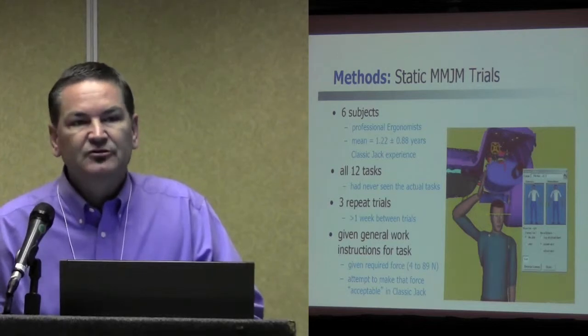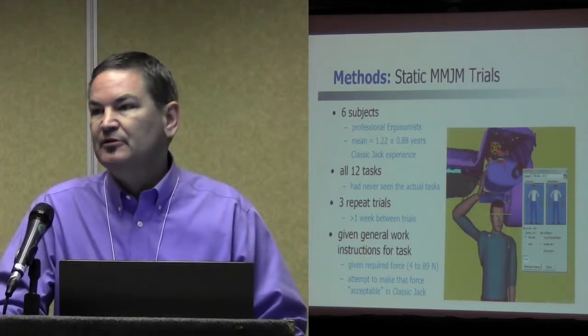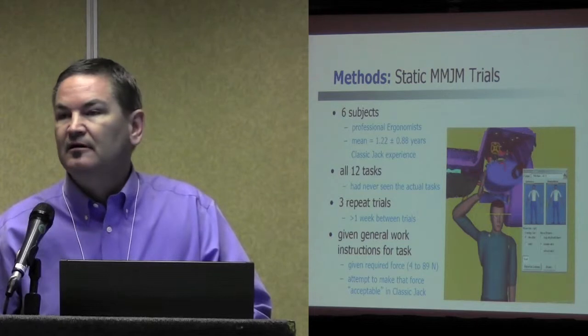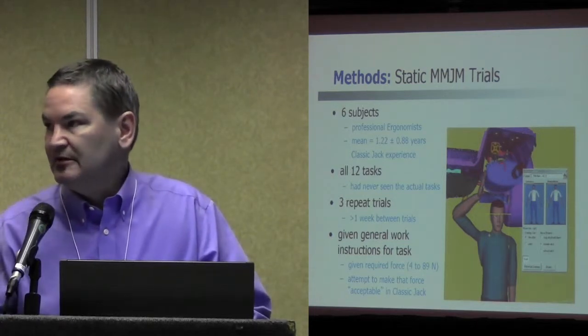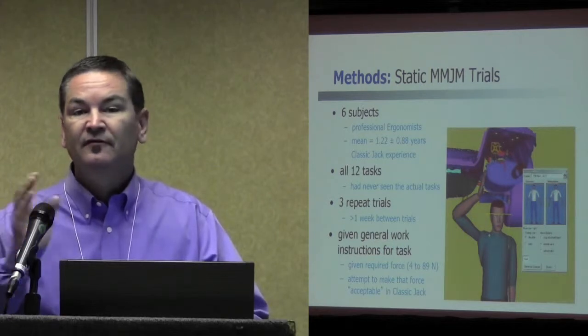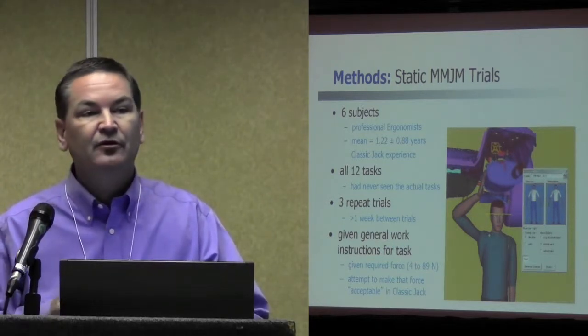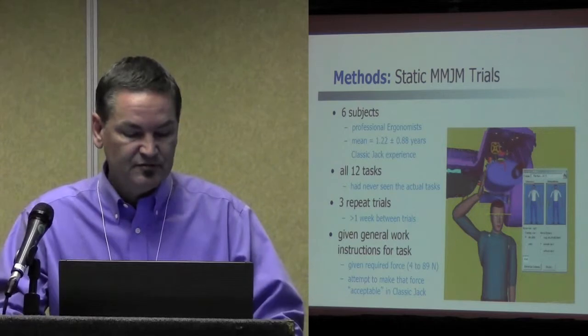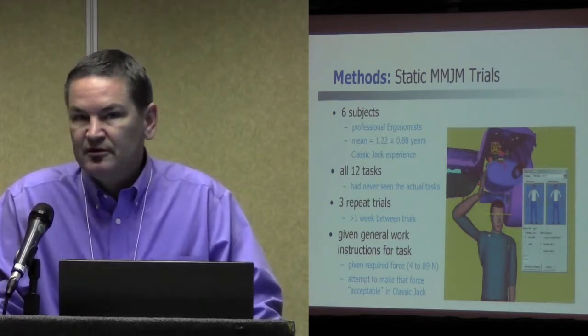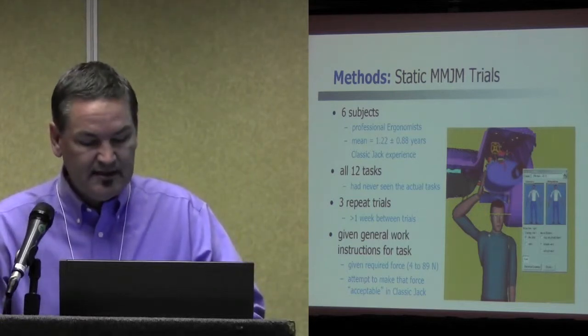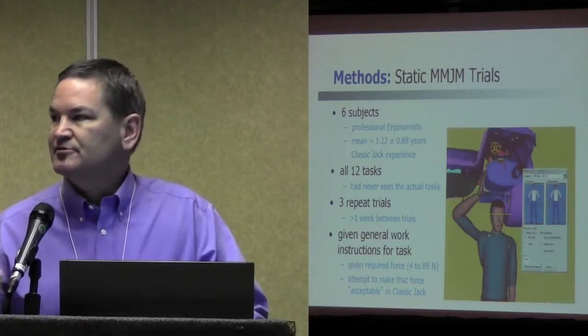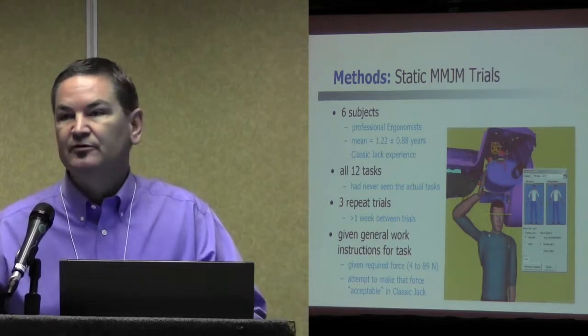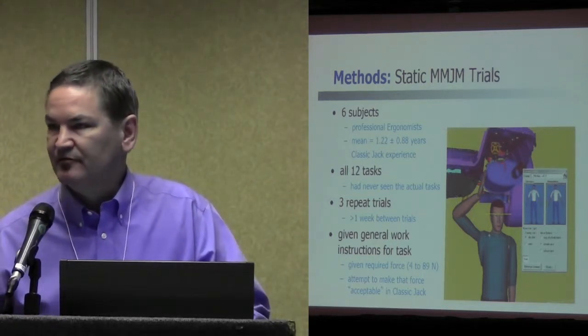So the static trials were done with six professional ergonomists, and they typically will sit at a workstation and make guesses about what someone would do. They would position the Jack or Jill mannequin in what they thought was the appropriate position. So we wanted to know how consistent they were if we had them come back every month and make these guesses, and we wanted to know how consistent they were across each other in terms of what they all felt was the perfect guess of how this would be done. They were given some general work instructions, which would eventually be given to the workers, and what they were trying to do was get the person in a position that was realistic but would also allow for the highest force.